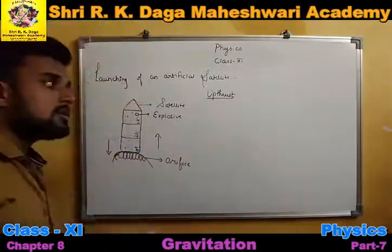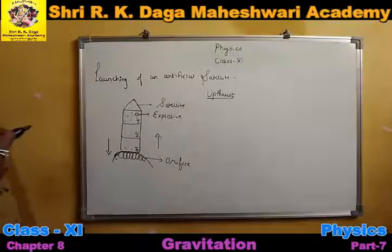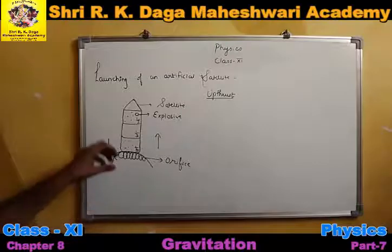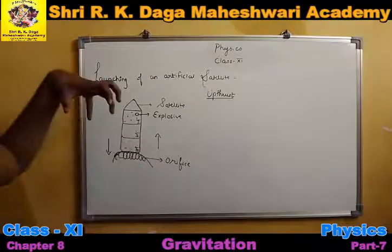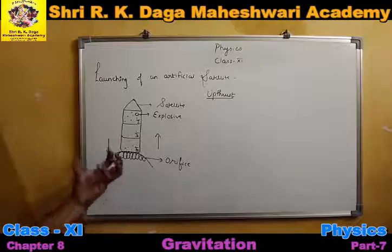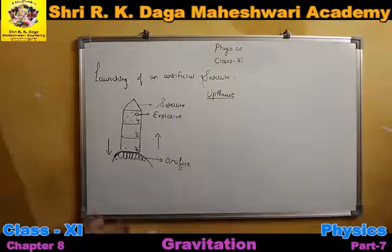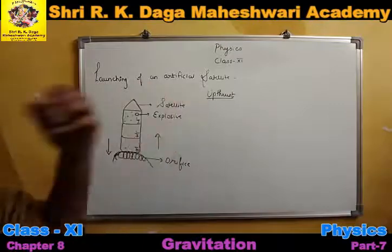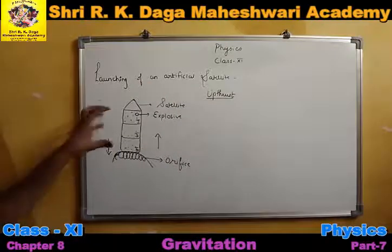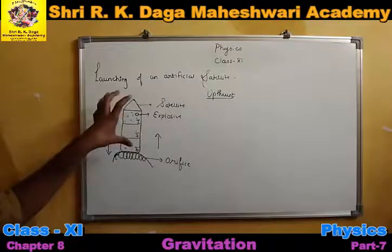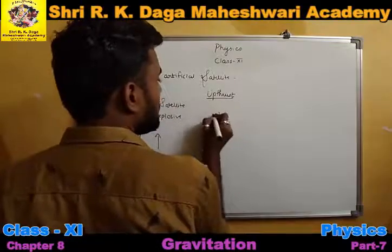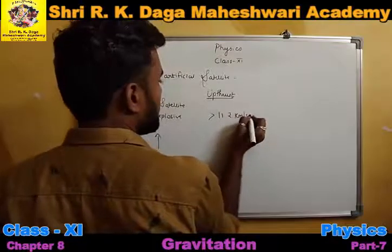Thrust is basically a force that acts in the perpendicular direction — if a force is applied at 90 degrees to an object, that force is called thrust. As the gases eject out at very high velocity, a thrust acts upward on the chambers. This way, the entire setup gains an extremely high velocity, greater than 11.2 km per second, which is actually the escape velocity.